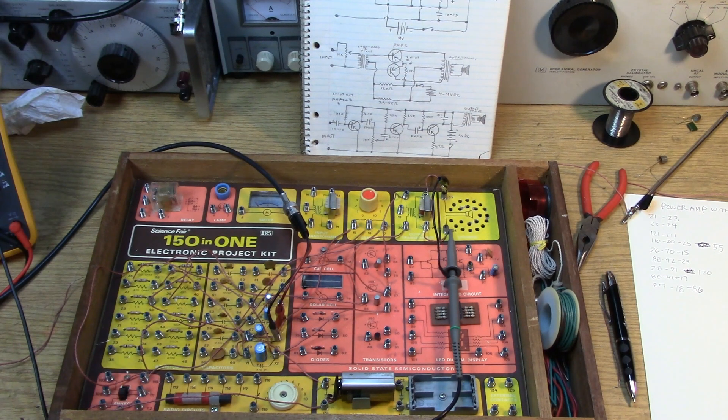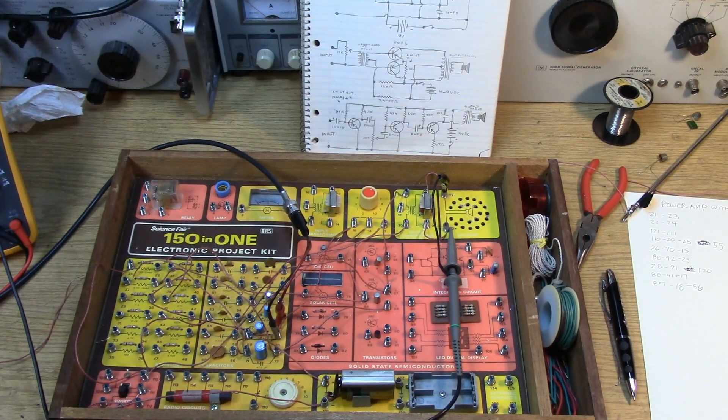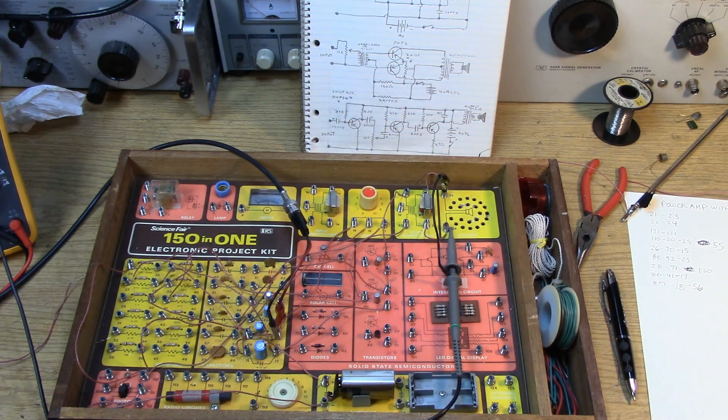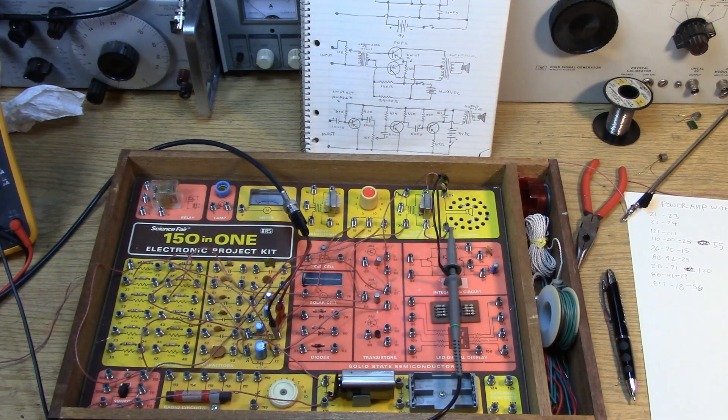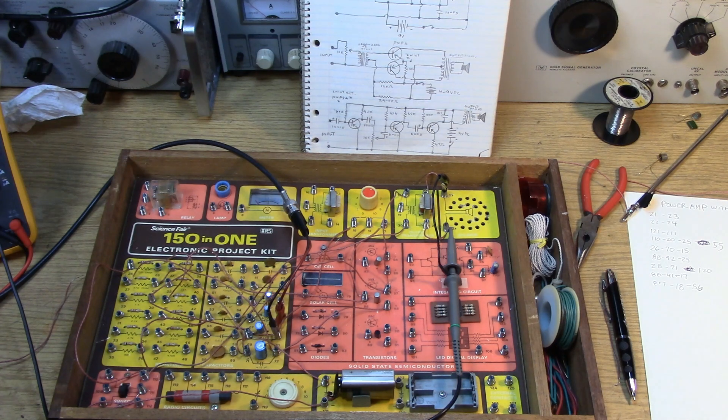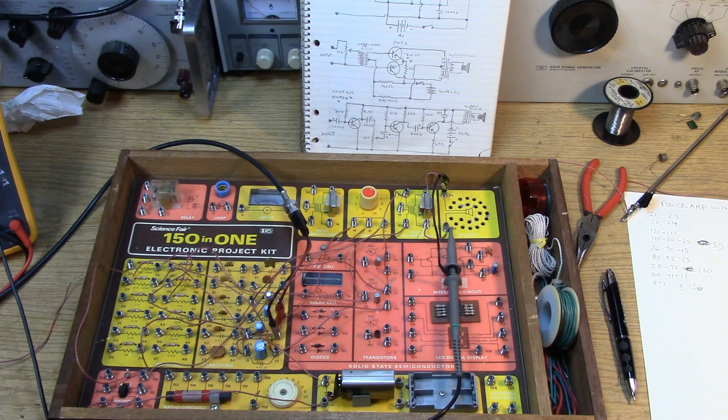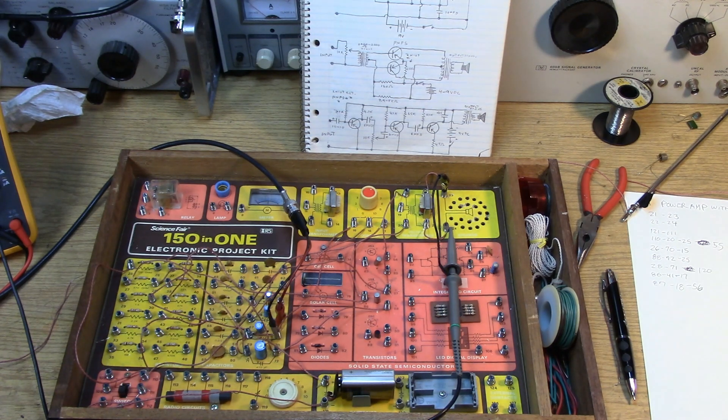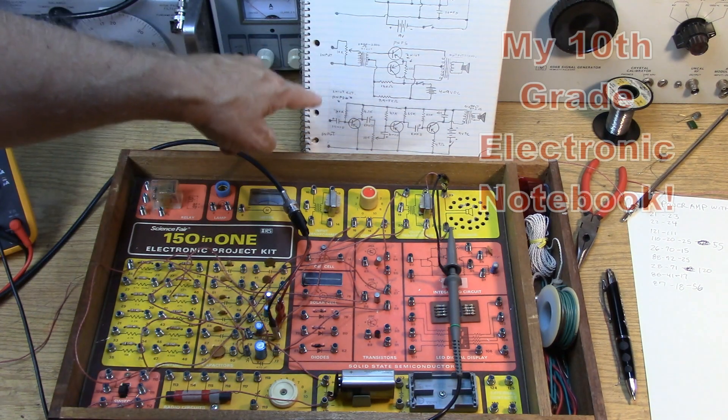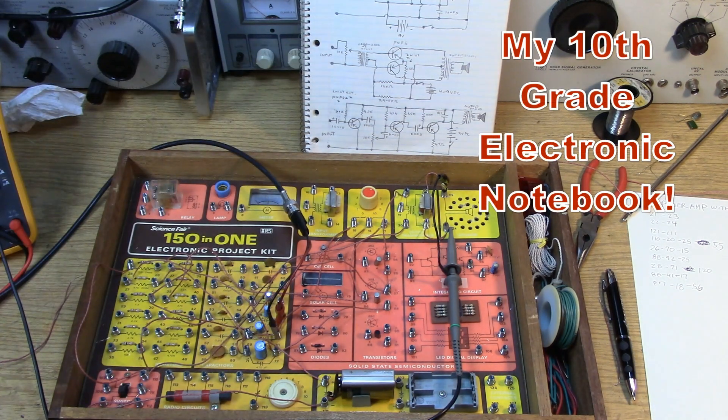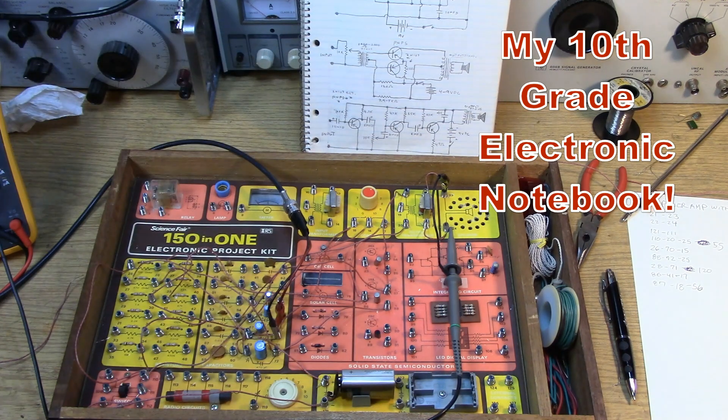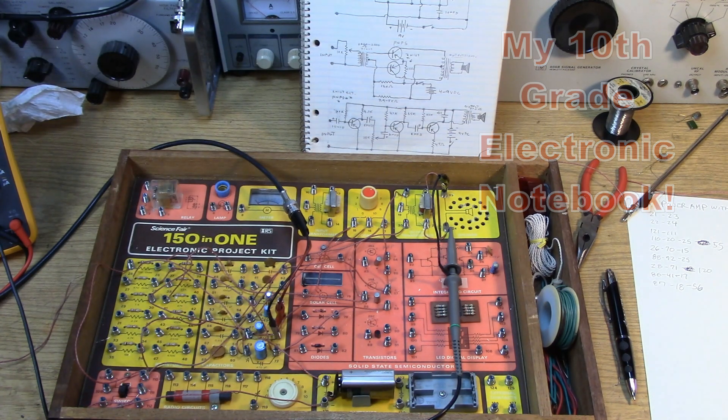So just about every project that involves a receiver or some type of tone amplification is going to require a power amplifier stage. And it's unfortunate that this kit did not have something like an LM386 on board, which is a general purpose power amplifier. But, as you can see in my old notebook from 10th grade, there's a couple power amplifier styles that are fairly popular that you can build with transistors.